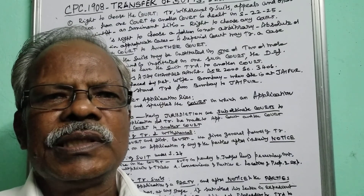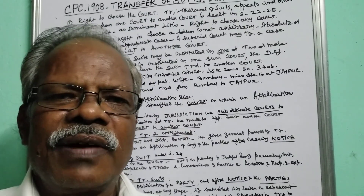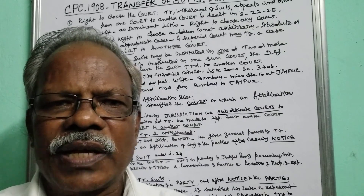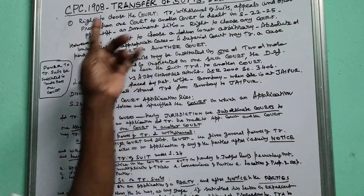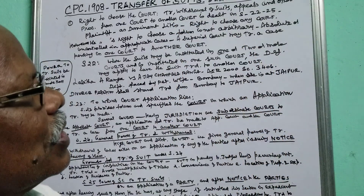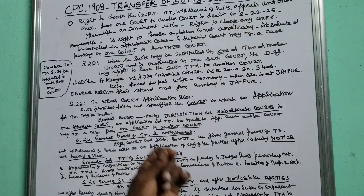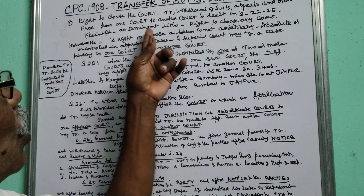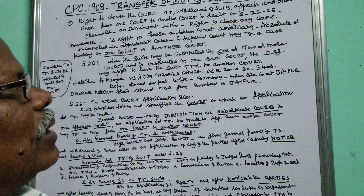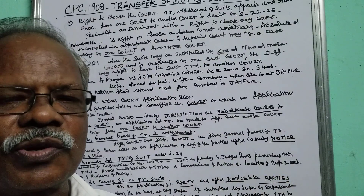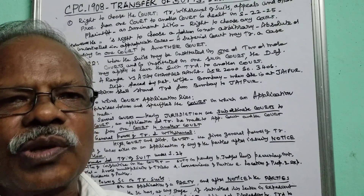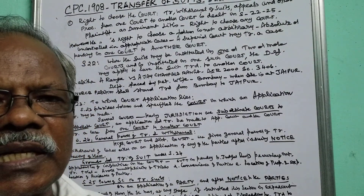This is about transfer of suits — under what condition, under what context, a civil case can be transferred from one court to another court. The transfer and withdrawal of suits, appeals, and other proceedings from one court to another court is dealt in sections 22 to 25.